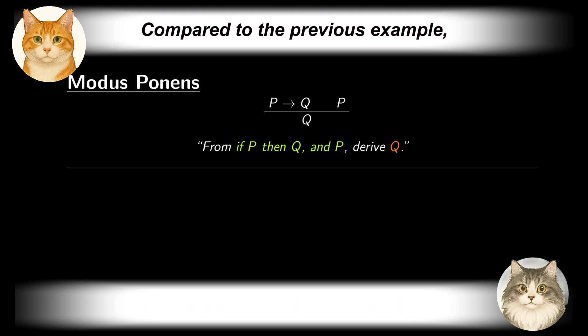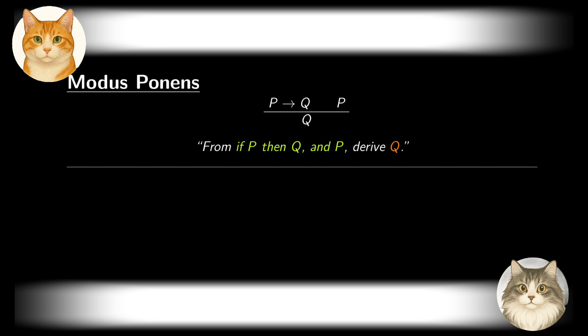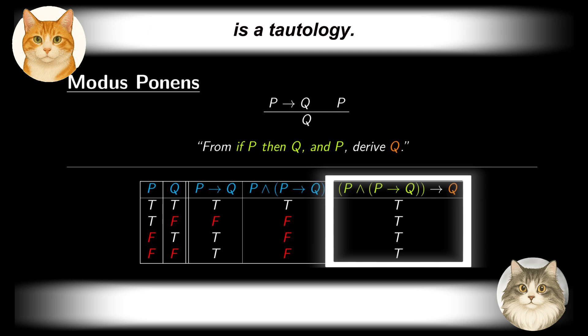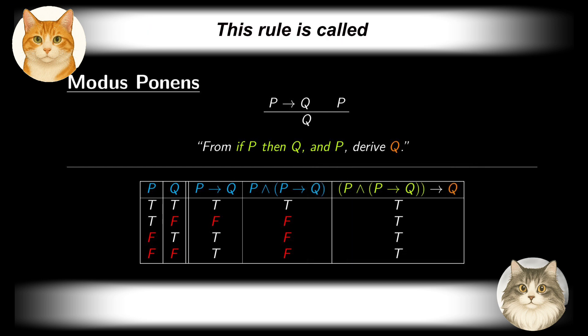Compared to the previous example, this time we have added P itself into the premises. This rule of inference is indeed valid. The implication proposition associated with it is a tautology. This rule is called modus ponens and is of fundamental importance.